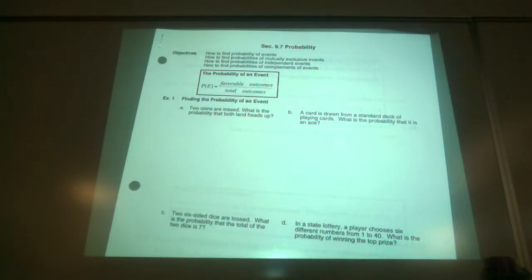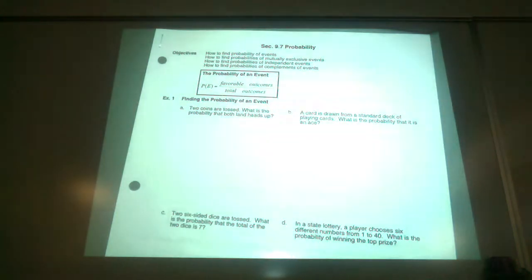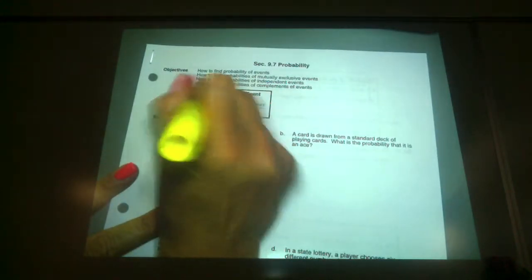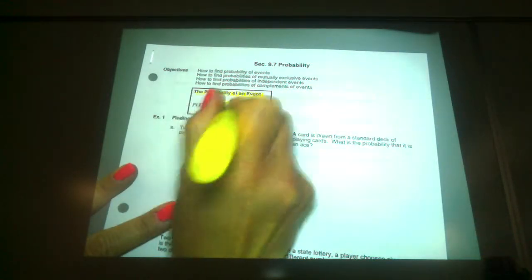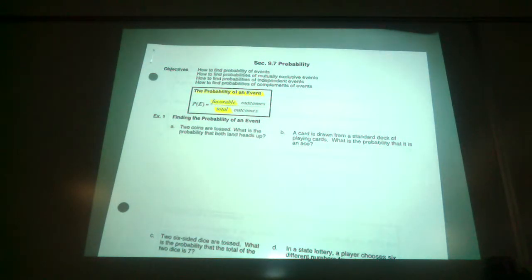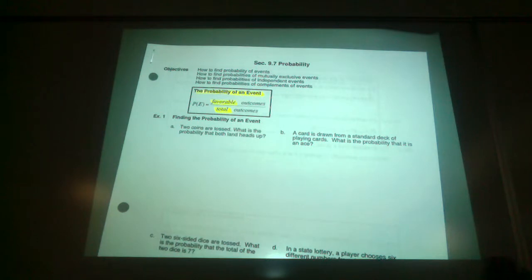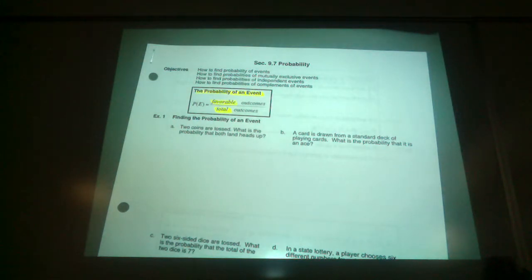All right, so here we go. If you look at the first page, the probability of an event is what we're concentrating on, and typically it's favorable over total. Favorable just means what do we want to occur. Sometimes they'll say, what's the probability of an event not occurring? So sometimes your favorable is a not. Finding the probability of an event.